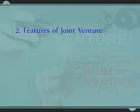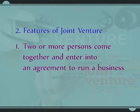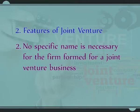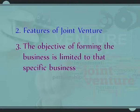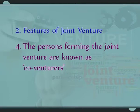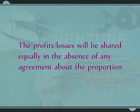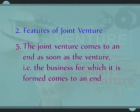Point number 2: Features of joint venture. Number 1: Two or more persons come together and enter into an agreement to run the business. Number 2: No specific name is necessary for the firm formed for a joint venture business. Number 3: The objective of forming the business is limited to that specific business. Number 4: The persons forming the joint venture are known as co-venturers, who agree to share profits or losses in the agreed proportion — equally in the absence of any agreement. Number 5: The joint venture comes to an end as soon as the venture for which it was formed comes to an end.